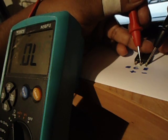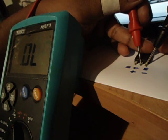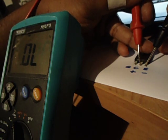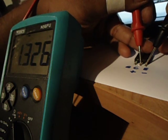You take your positive terminal, you touch the gate. One second. Now go back to the collector. You should get a reading.